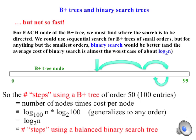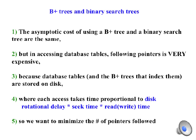All said, if all steps are about equivalent in terms of cost, where a step can be following a pointer or computing a midpoint of an interval and jumping to it, B-plus trees and binary search trees have about the same asymptotic cost.